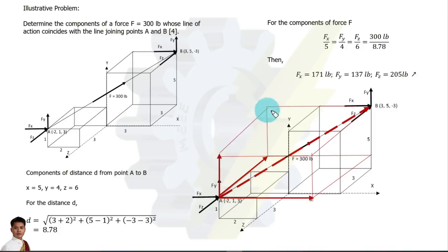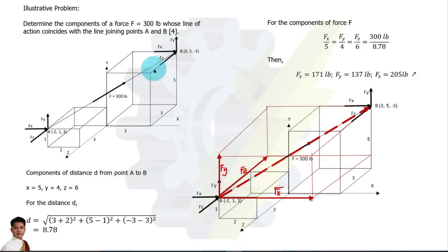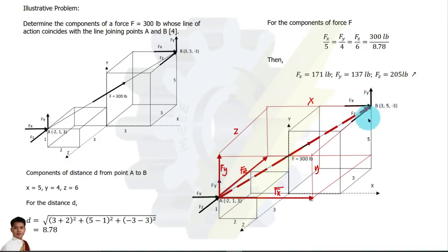This is our rectangular parallelepiped, and the given force can be drawn like this — this is our force F shown as a broken line, with its components Fx, Fy, and Fz. We need to identify x, y, and z. This is our z, this is our x, and this will be our y. X is the horizontal distance between the given points. Our first point has coordinates negative two, one, and three, and the second point is positive three, positive five, and negative three.